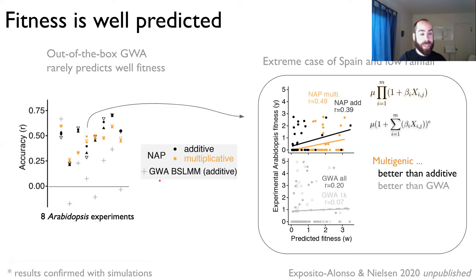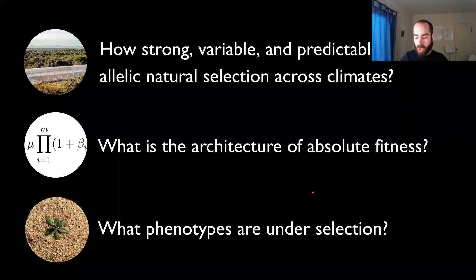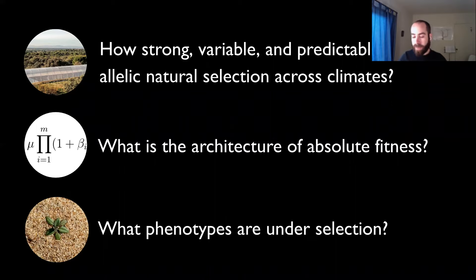Focusing on Spain and low rainfall, under cross-validation our model predicted experimental fitness with a Pearson correlation coefficient of 0.5 under the multiplicative model, compared to the additive model or state-of-the-art GWAS. So creating a tailored genome-wide association of fitness that allows multiplicative architecture may increase our ability to predict absolute fitness and aid in developing demographic models for the forecasting framework we saw previously.